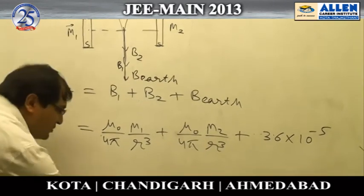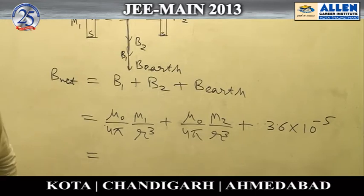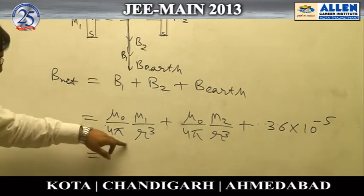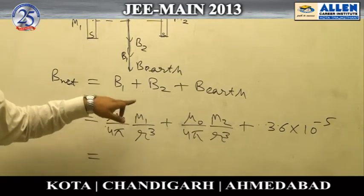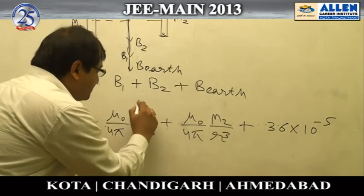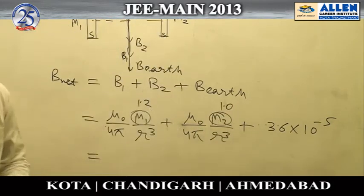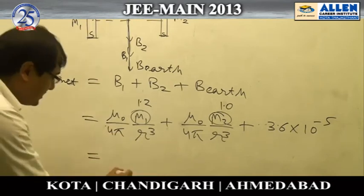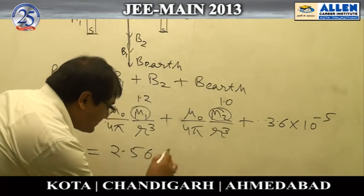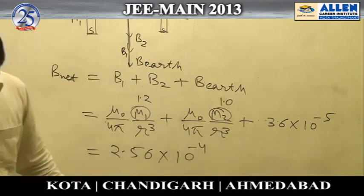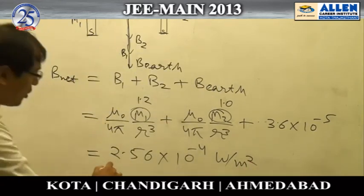Putting in the given values — we do not require the length of the magnet; we just need the magnetic moments, which are 1.2 and 1.0 — and adding all these values, we get the correct answer: 2.56×10⁻⁴ Weber per meter square, which gives option 2.